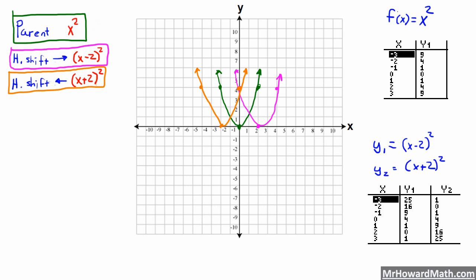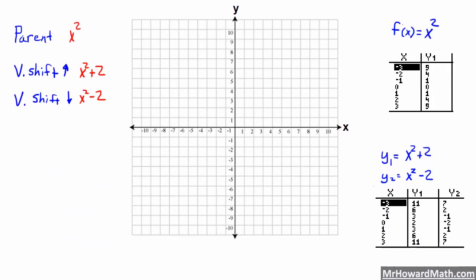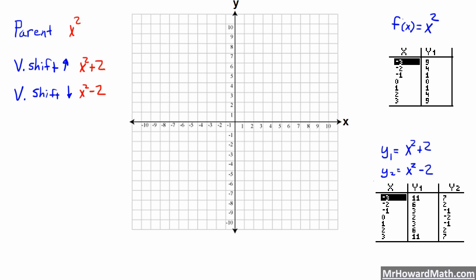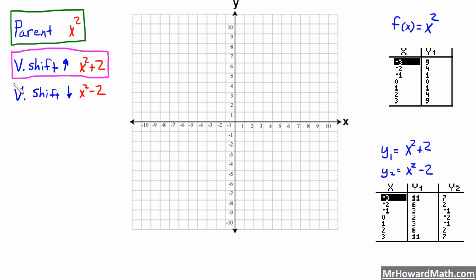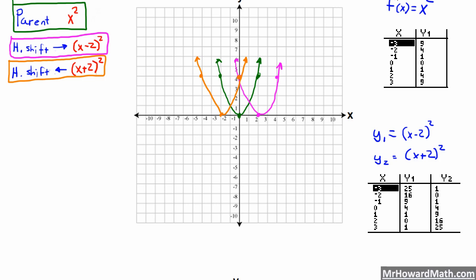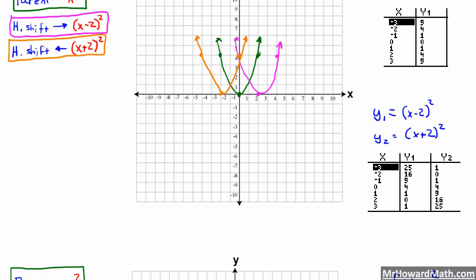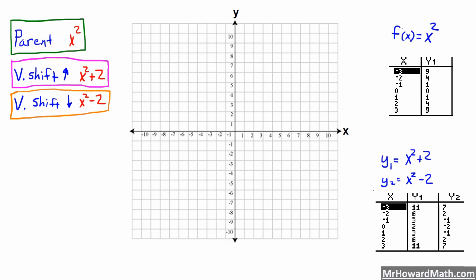Now let's go down and look at our vertical shifts. We've got shift up. Notice we're going with the sign — it's plus 2, and we are outside the parentheses with x. So it's x squared plus 2, as opposed to what we had before where the number was in the parentheses with x. That was our horizontal shift. Here is our vertical shift. So see the difference.